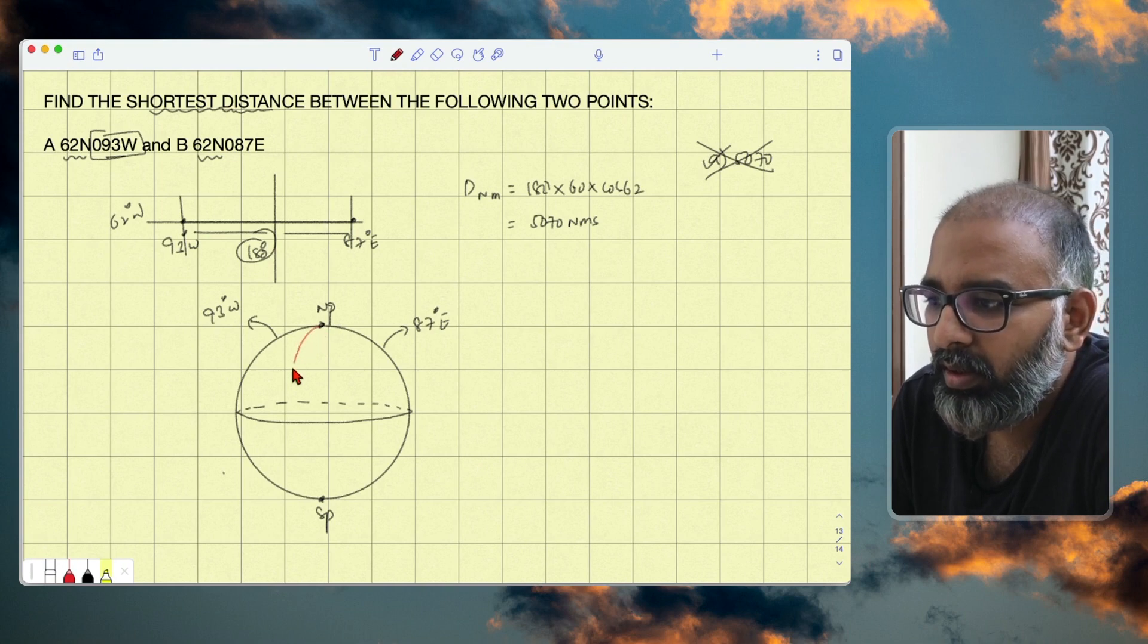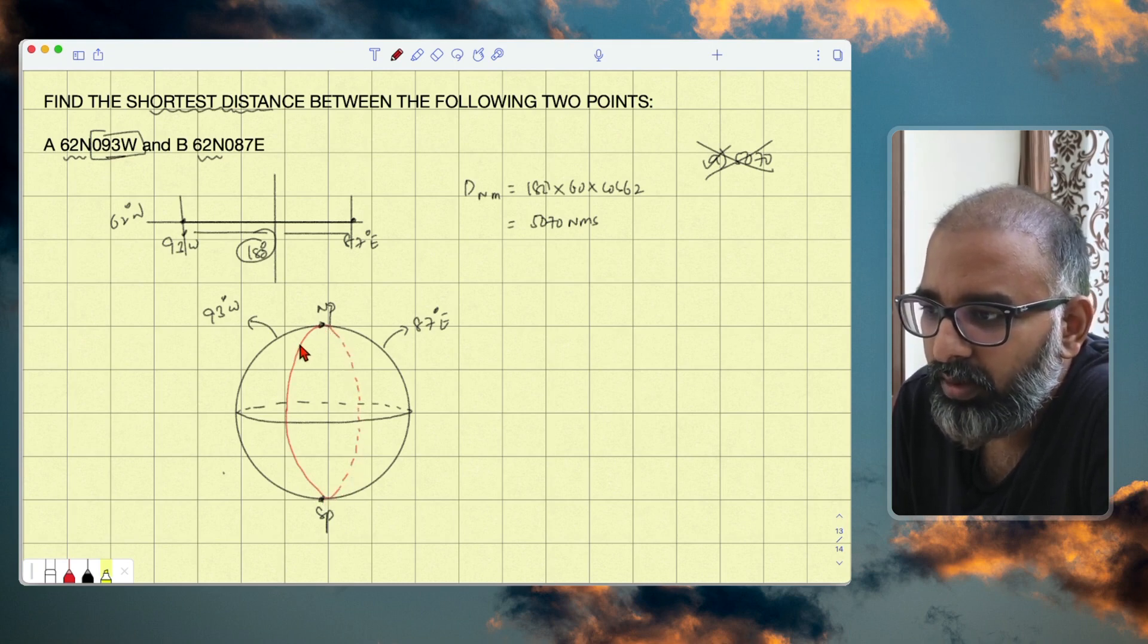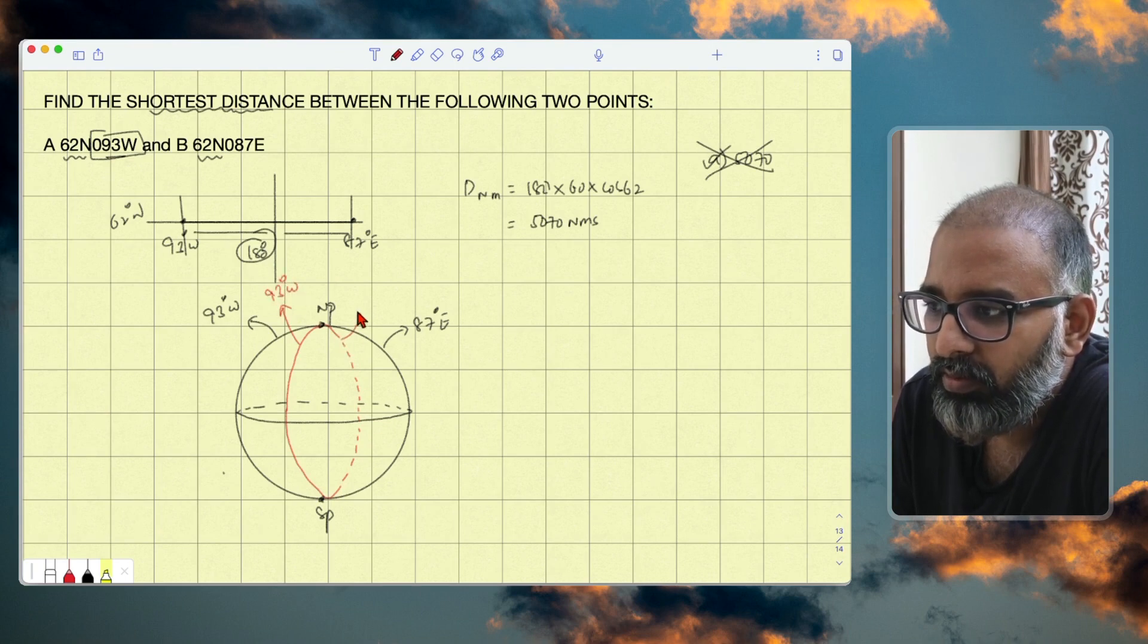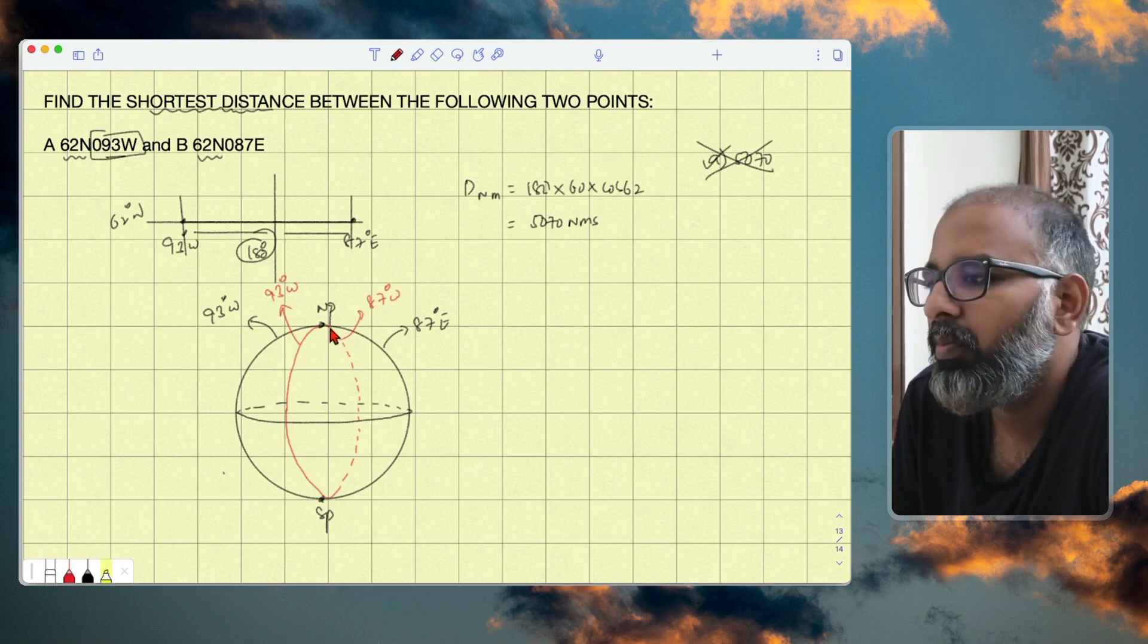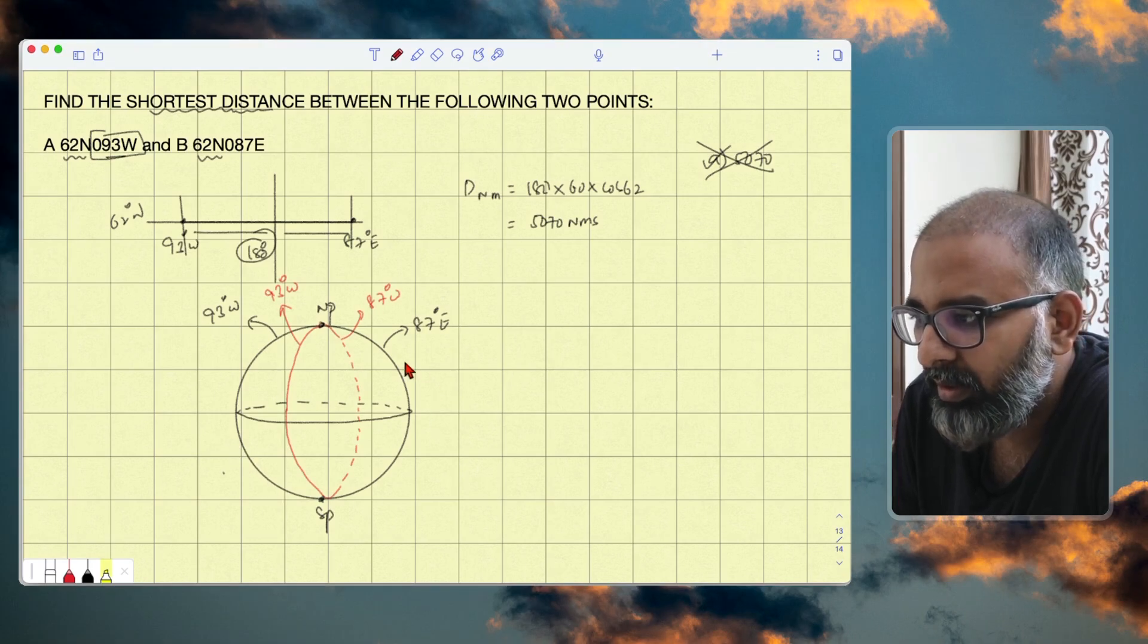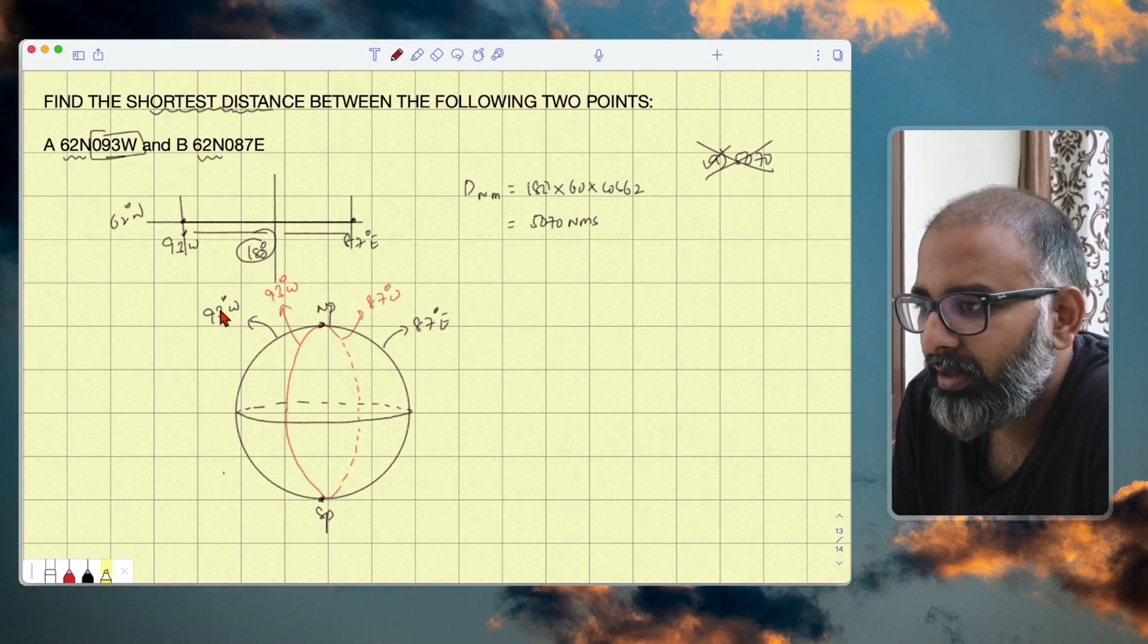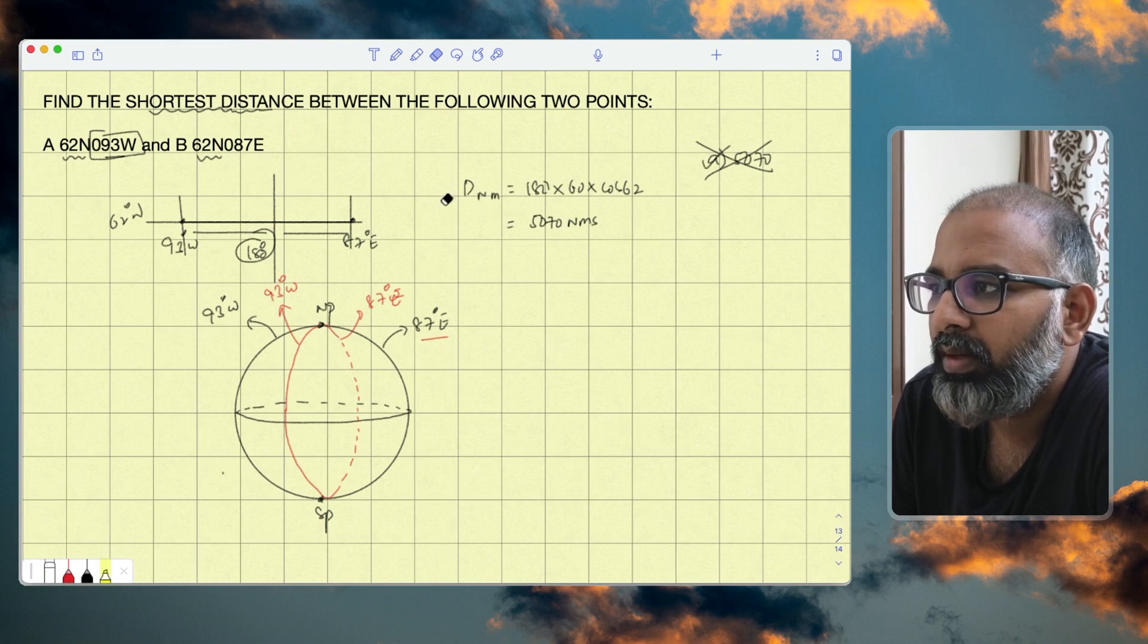That means they are exactly opposite meridians to each other. For example, if I draw a perfect sphere joining north pole and south pole like this, perfect circle not a sphere, on the opposite side of the earth it goes like this. If this is 93 west, this will be 87 degrees east. They are exactly lying opposite to each other. I will take 93 west and 87 east on this outer marking of this circle.